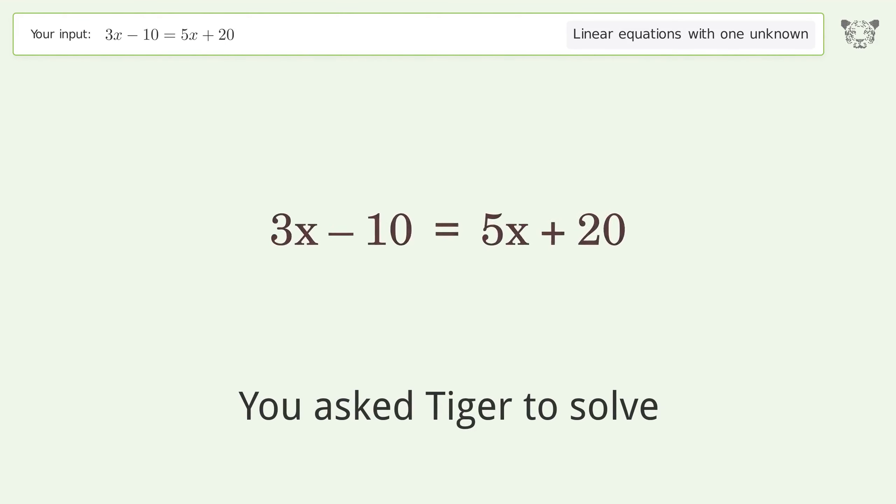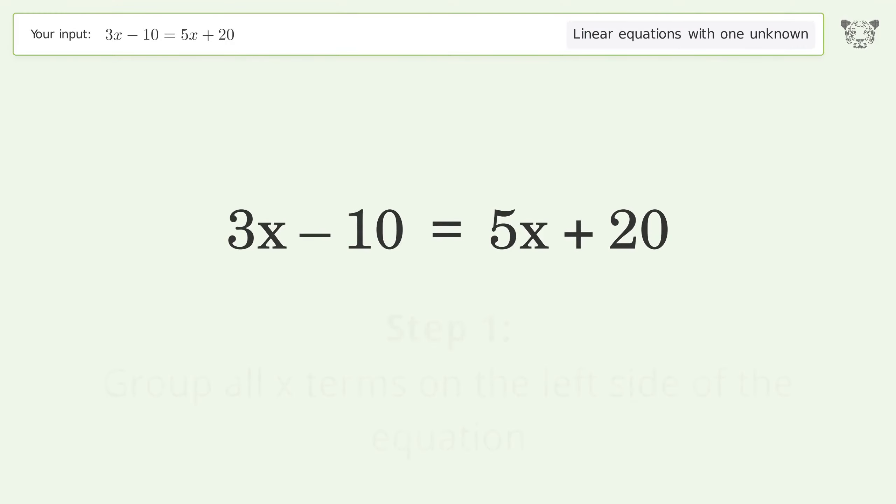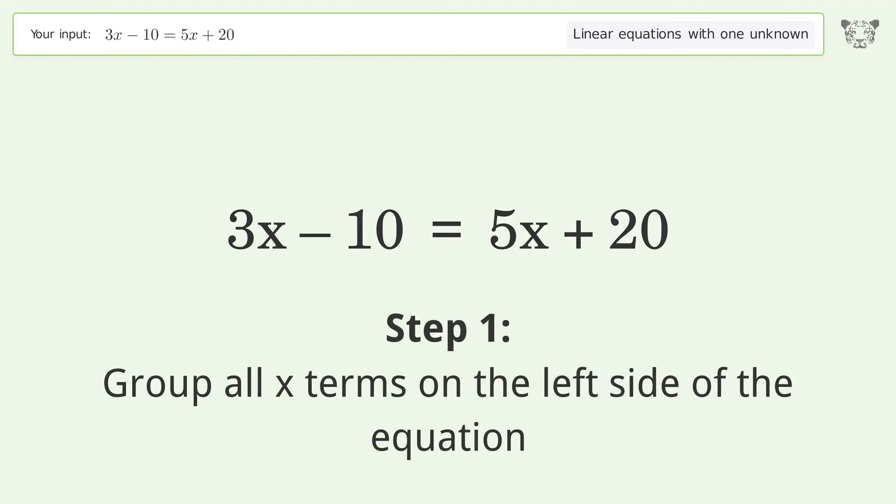Let's solve this linear equation with one unknown. The final result is x equals negative 15. Let's solve it step by step. Group all x terms on the left side of the equation.